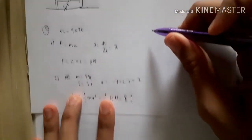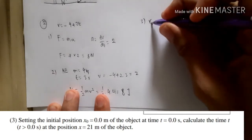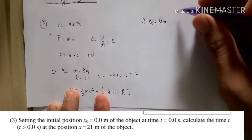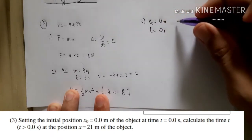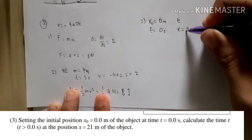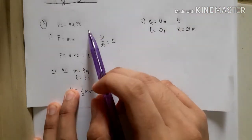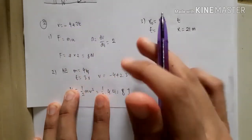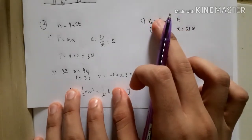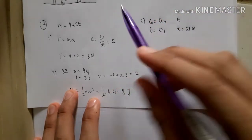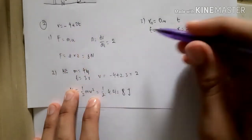Now, for number three, setting the initial position of x0 is 0 meters of the object at time t is 0 second. Calculate the time t so that the position is at x equals 21 meters. So, basically, from this equation, we have to find what is the time needed to reach 21 meters from the initial position. So, we have to find the equation of the distance. By the velocity, we just need to integrate that.